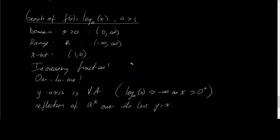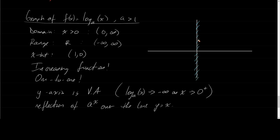Just to have a quick sketch of our generic parent function: we've got a vertical asymptote at x equals 0, an x-intercept at (1, 0), and it looks like a logarithmic curve increasing from left to right. All logarithmic functions with base greater than 1 have that form.